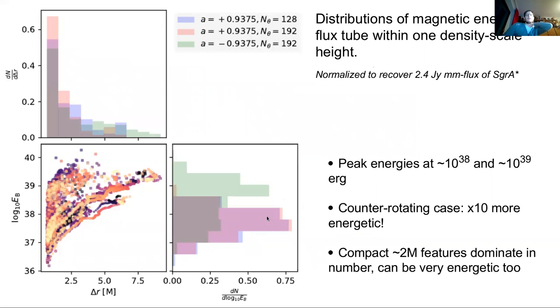And that sets the entire normalization. So we just measure the energy of the flux bundle within one scale height of the disk and get this distribution. So overall you have 10 to the 38 ergs in the co-rotating cases. And it's actually quite nice to see that this counter-rotating cases, which have these bigger dips in the magnetic flux, are all more or less an order of magnitude more energetic, these explosions.